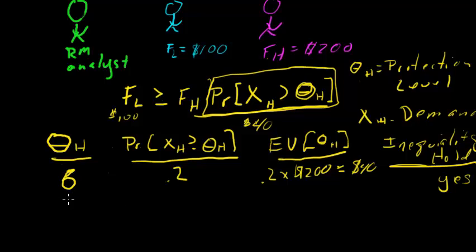And remember the rule is we continue to lower theta until the inequality doesn't hold. So now let's choose 5. Let's say the probability of at least 5 customers requesting that seat is 0.3. Now the expected value is 0.3 times 200, $60 here. So now on this side you have $60. Does the inequality hold? Yes, it's still better to take this customer at $100 than to protect the fifth seat for a $200 customer because the expected value is only $60.